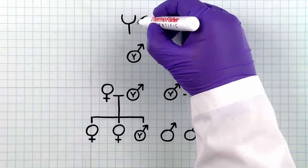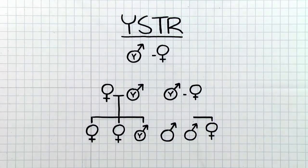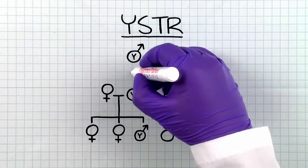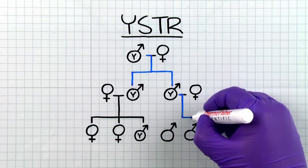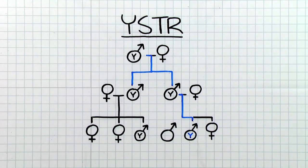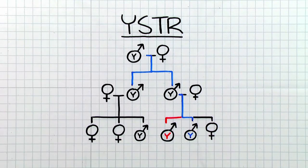The most useful YSTR kit will have a balance of standard YSTRs for kinship analysis and rapidly mutating YSTRs for familial distinctions. Because of the increased discrimination capacity of rapidly mutating YSTRs, there has been discussion around incorporating these markers into autosomal STR kits to help determine the number of males in a given profile.